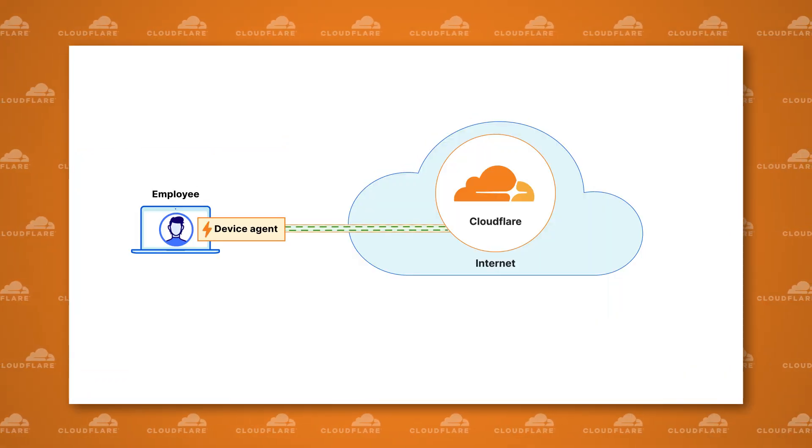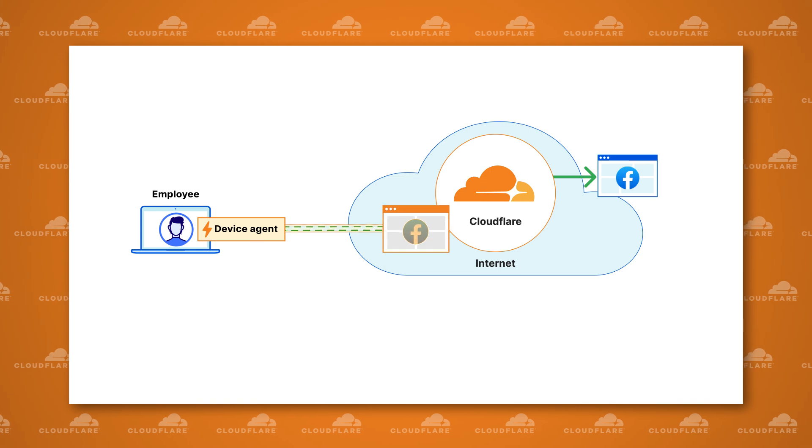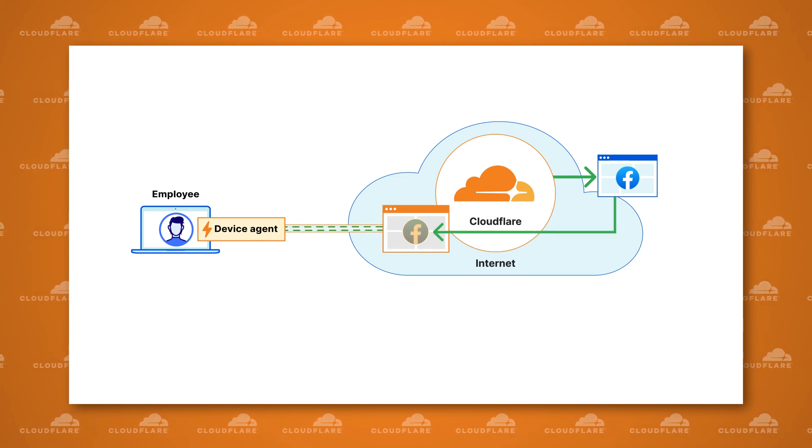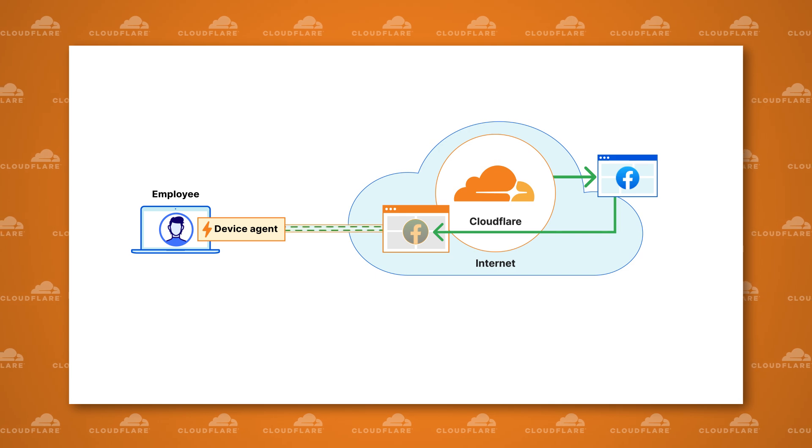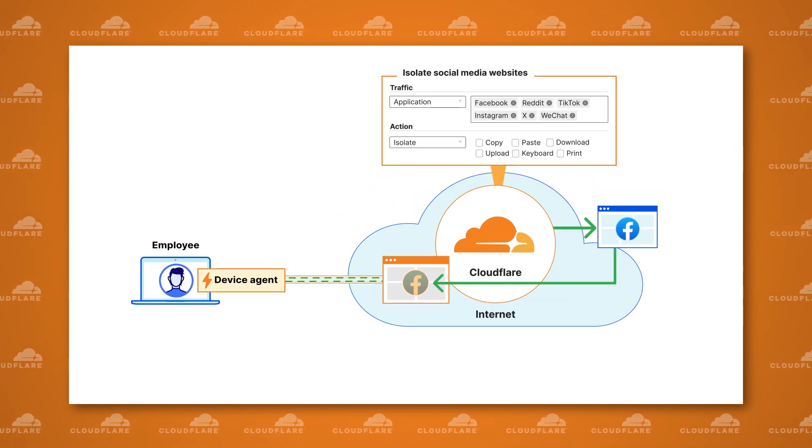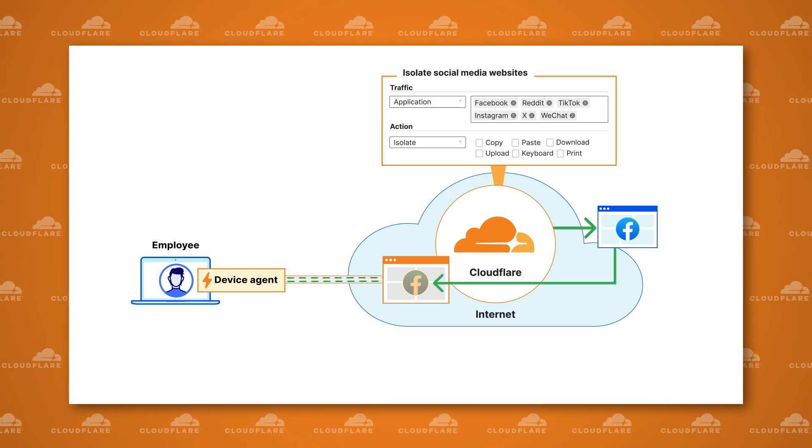Sometimes the risk for a website isn't well known. For example, you might deem social media websites to be a little risky but your marketing department still requires access. Newly registered domains might sometimes be part of a phishing campaign or they might just be a legitimate new website. In these cases, Cloudflare has a really cool capability: you can write a policy so that when a user makes a request for a website you think is a little risky, instead of their machine receiving all the content directly, we spin up a headless browser on our network and render the content first — isolating any potential bad behavior in a secure, isolated environment.